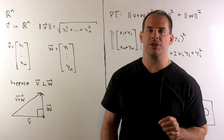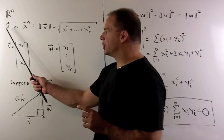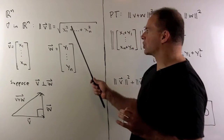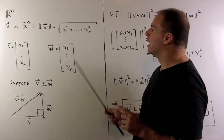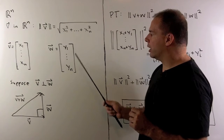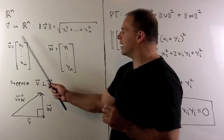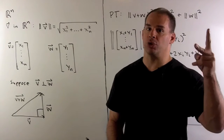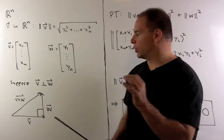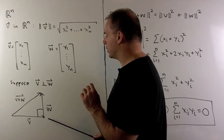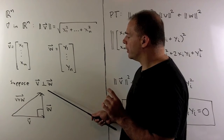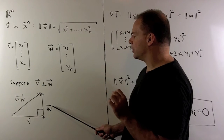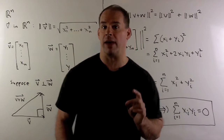Let's do some mechanics. We have our definition of length of a vector in Rn. Suppose v is given by x1 through xn; then the length of v is the square root of the sum of the squares of the x's. I'll have another vector w, given by y1 through yn. We assume that v and w are perpendicular — meaning we take the plane spanned by v and w, and in that plane they are at right angles. Since we have a right angle, by the Pythagorean theorem: the length of v squared plus the length of w squared equals the length of v plus w squared.